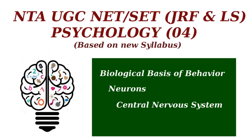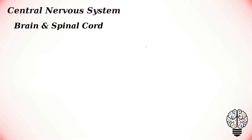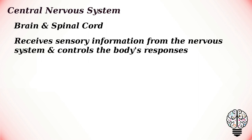Hey everyone, welcome to this psychology series. In this video we are going to talk about the central nervous system. The central nervous system receives sensory information from the nervous system and controls the body's responses. It plays a primary role in receiving information from various areas of the body and then coordinating this activity to produce the body's responses.